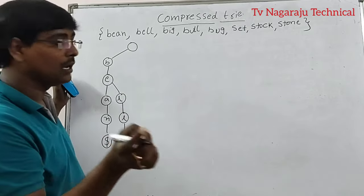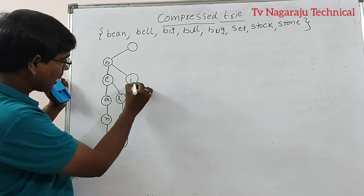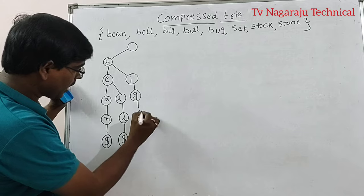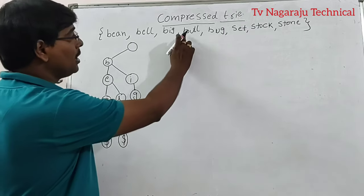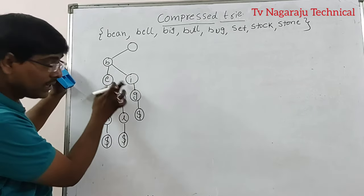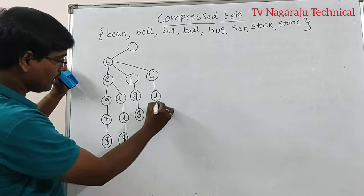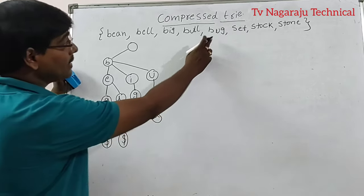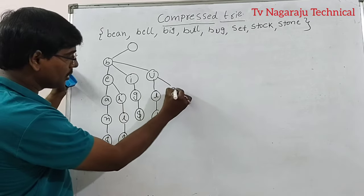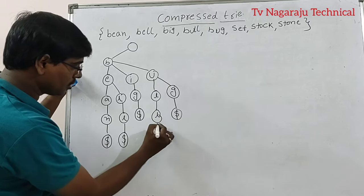Now big: B, I, G — there is no I under B, so we add I, G, followed by dollar. Next, bull: B is available, there is no U under B, so we add U, L, L. Then bug: B, U is available, add G. Dollar is placed at the end of each string.